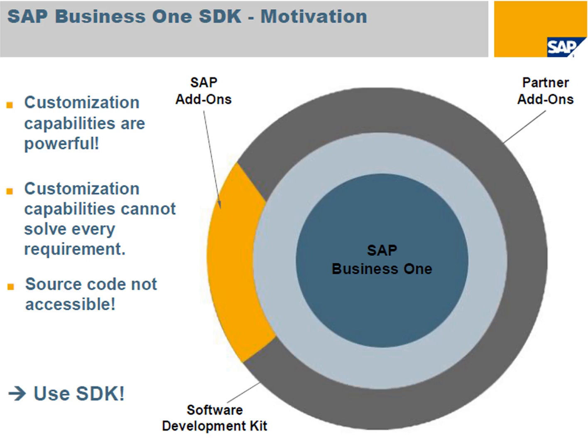If your enhancements need more, you can use the SAP Business One Software Development Kit. With this software development kit, you can: 1. Add industry-specific functions. 2. Add other functions you deem necessary. 3. Create interfaces to third-party tools. The Software Development Kit gives access to Business One internals via a set of programmatic interfaces based on the component object model.